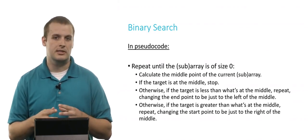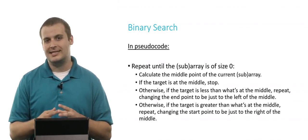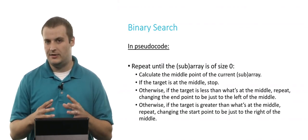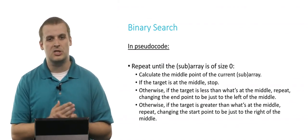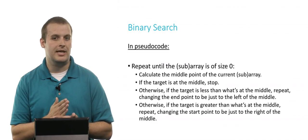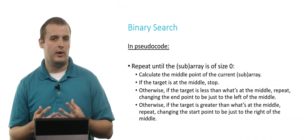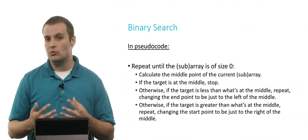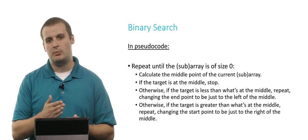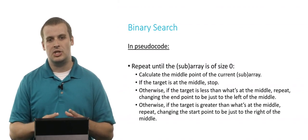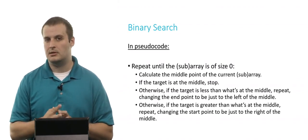We knew that the middle was too high, or that the target was less than the middle, so it must exist somewhere to the left of the midpoint. We'll set the array location just to the left of the midpoint as the new endpoint. Conversely, if the target is greater than what's at the middle, we do the exact same process, but instead change the start point to be just to the right of the midpoint we just calculated, and then begin the process again.